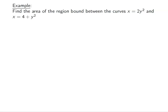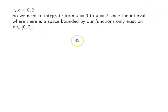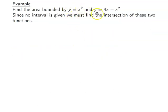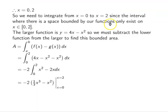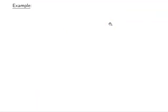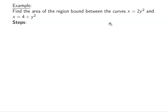Let's find the area of the region bounded by the curves x = 2y² and x = 4 + y². This is different — these are functions in y rather than x. The approach is essentially the same, but we integrate with respect to y.